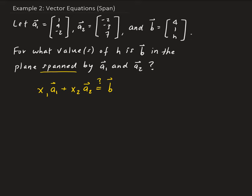So we're going to go ahead and formulate our matrix system. We have 1, 4, negative 2, and then negative 2, negative 3, 7. And I'm going to augment the vector b, so we have 4, 1, and h.